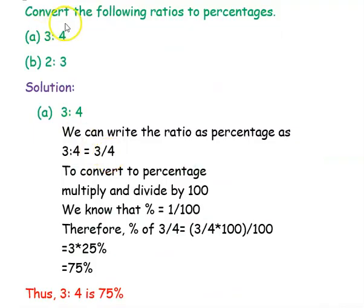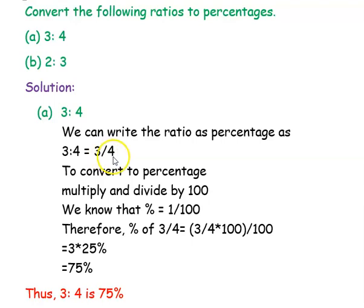First example is: convert the following ratios to percentages. The ratio given is 3 is to 4. We can write the ratio as a fraction: 3 is to 4 equals 3 divided by 4. To convert to percentage, we multiply and divide by 100, and we know that 1 percentage is equal to 1 divided by 100.